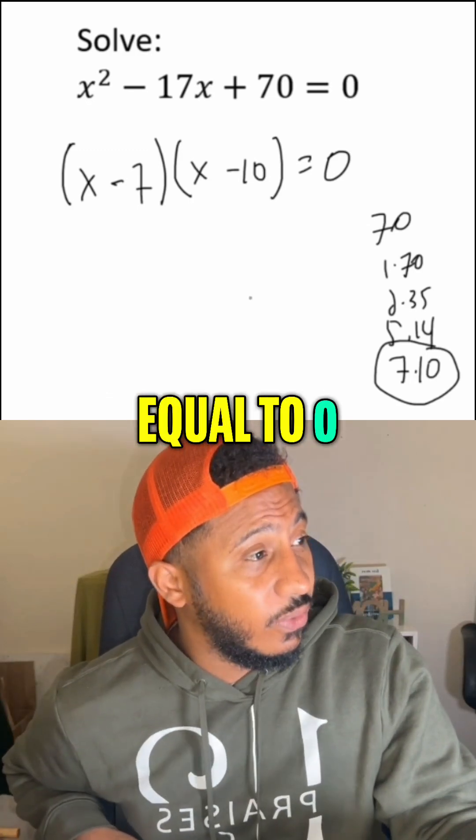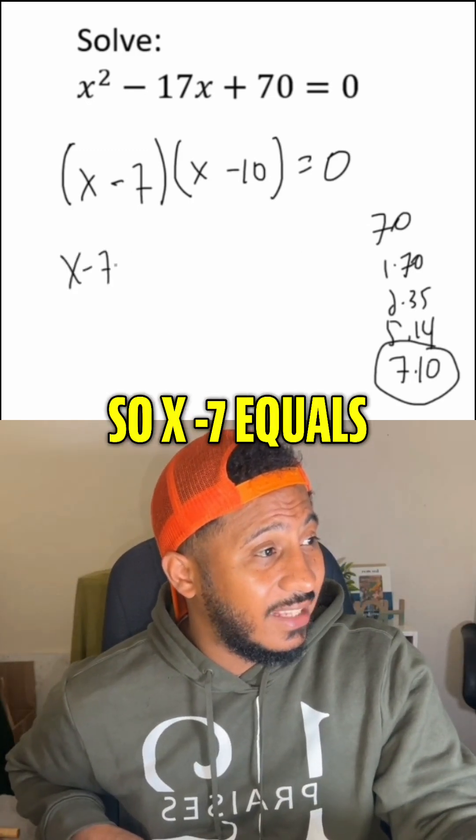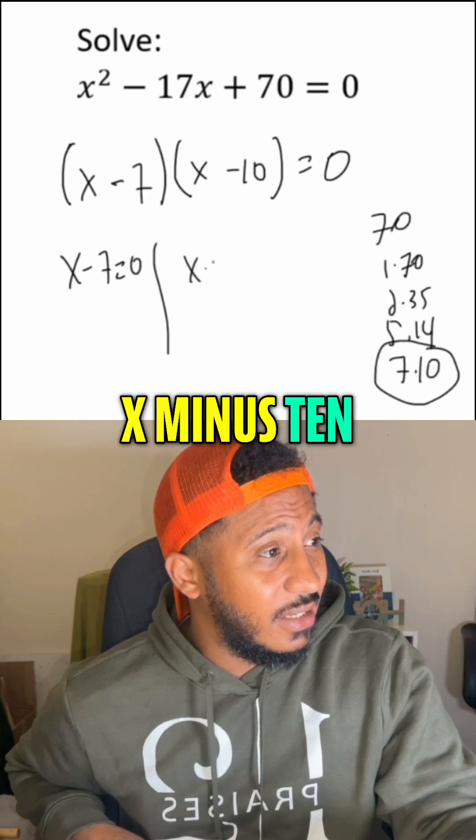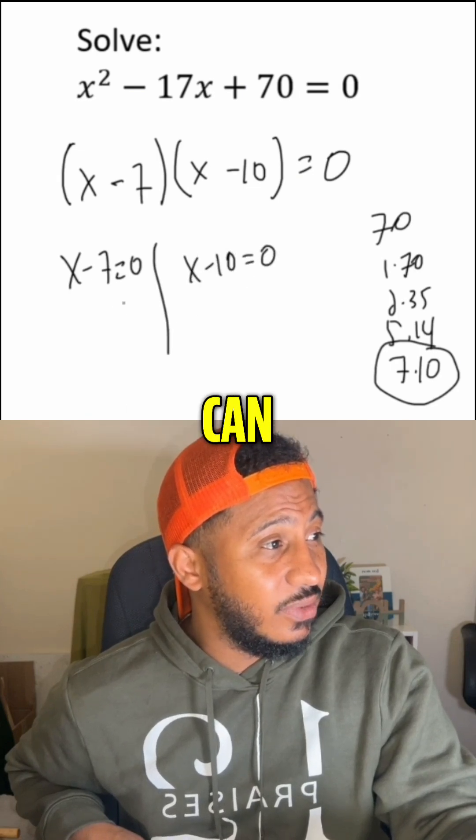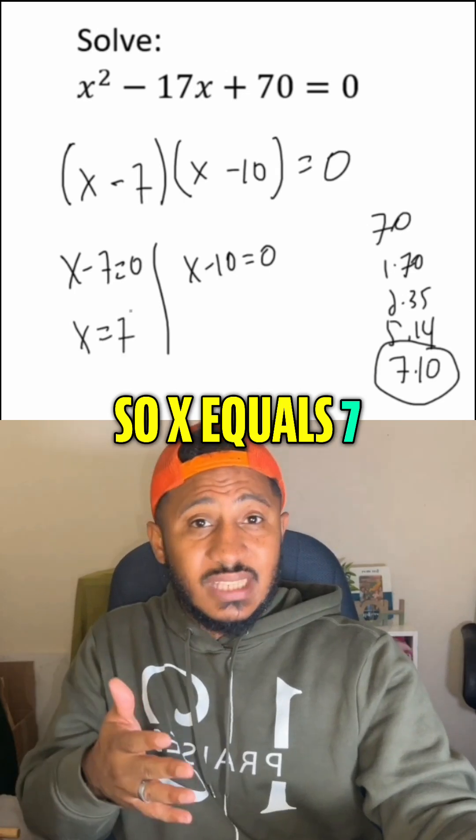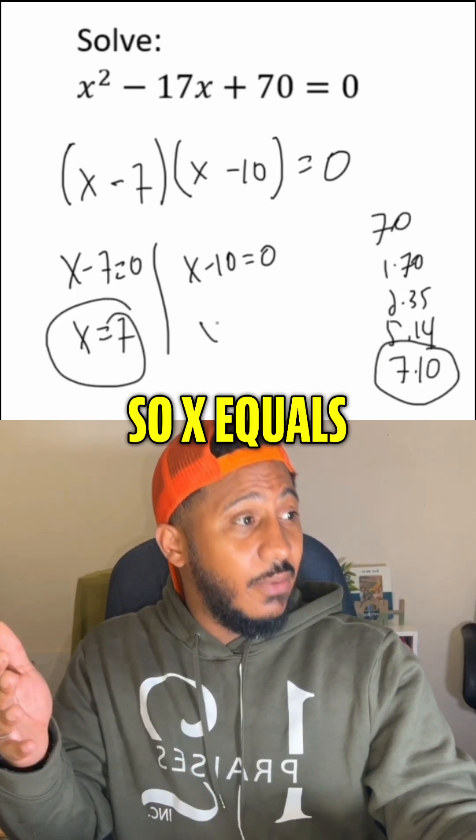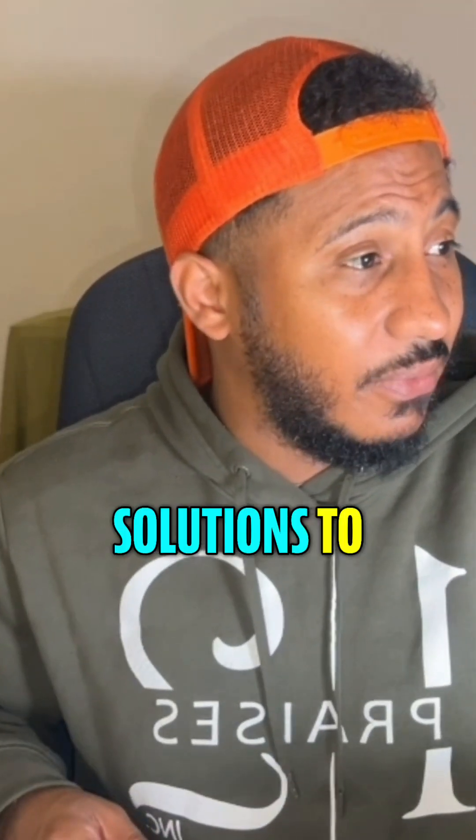and I'll set each factor equal to zero. So x minus seven equals zero, x minus 10 equals zero, and solve each of those separately. So here we can add seven, so x equals seven. And here we can add 10, so x equals 10. And those will be our two solutions to this equation.